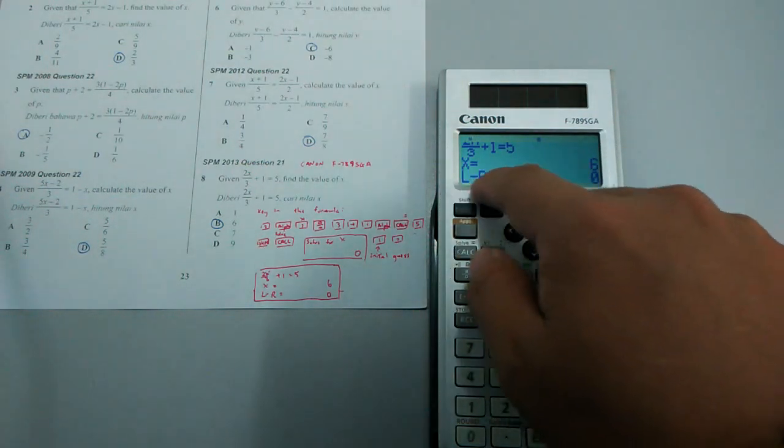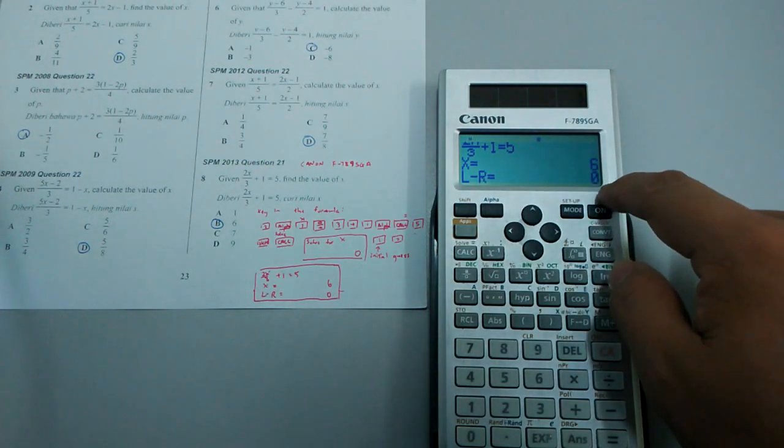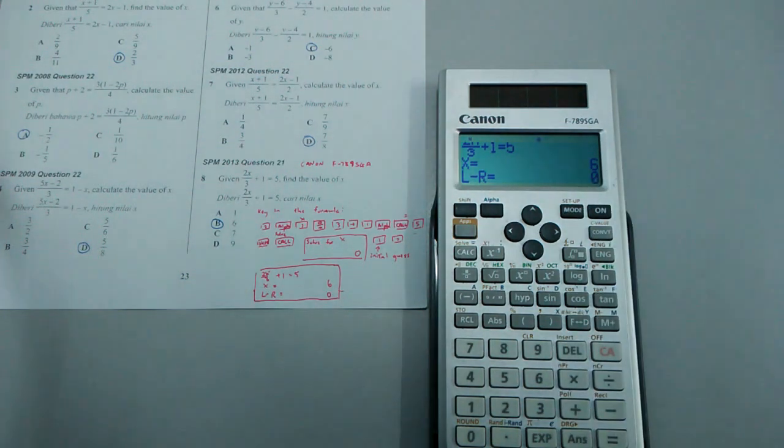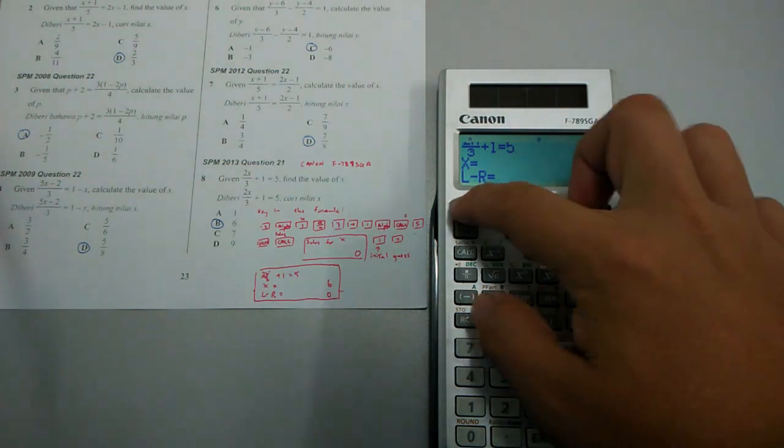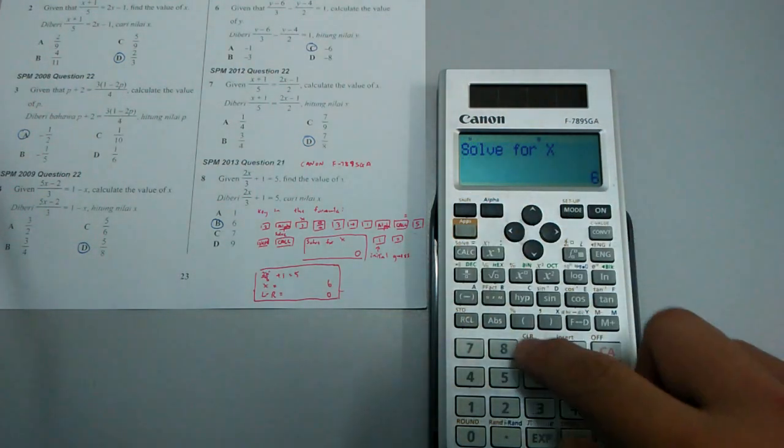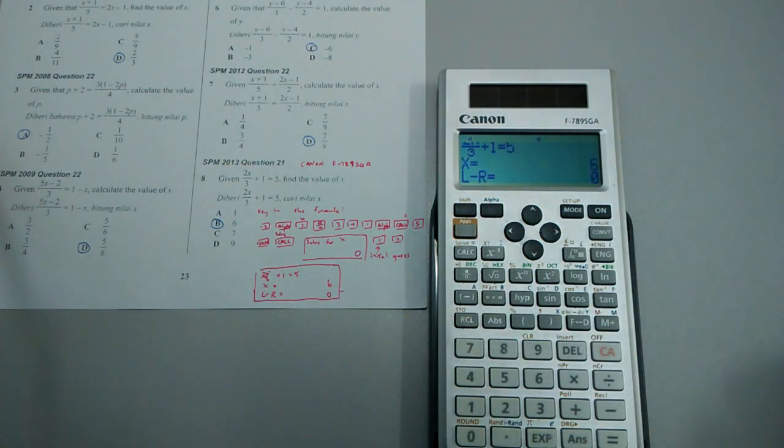Left hand side minus the right hand side equals 0. If it's not 0, that means it's not the final answer yet. Then you have to press shift solve again and continue with it.